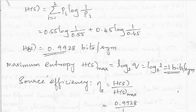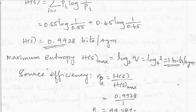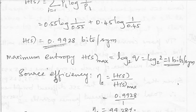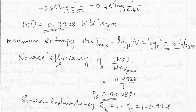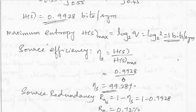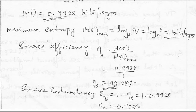Now, we have H(S), we have H(S) maximum. So from that, we can find the source efficiency, which is H(S) divided by H(S) maximum. So substitute here, H(S) is 0.9928, H(S) maximum is 1. So with that, we will get the efficiency as 99.28 percent.